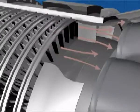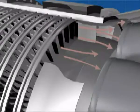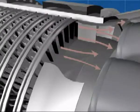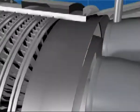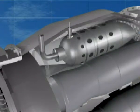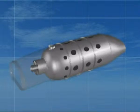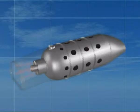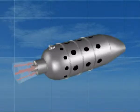Air leaves the compressor and passes to the diffuser, which converts the velocity energy to pressure energy. On leaving the diffuser, the air passes into the combustion chambers. Of the total mass of air passing to the combustion chambers, approximately 25%, known as primary air, enters the flame tubes through the flame tube orifice and is used for combustion.